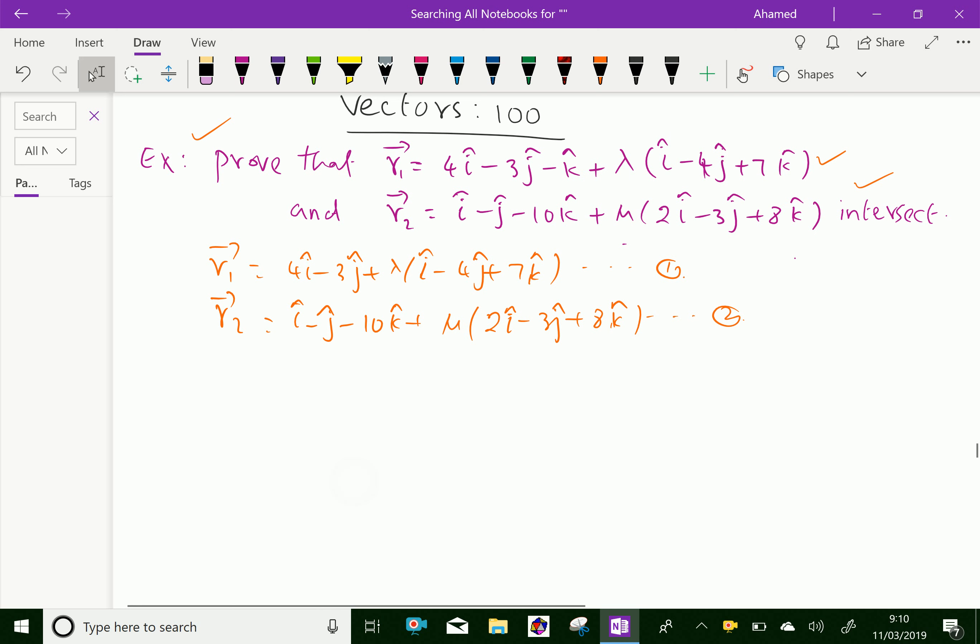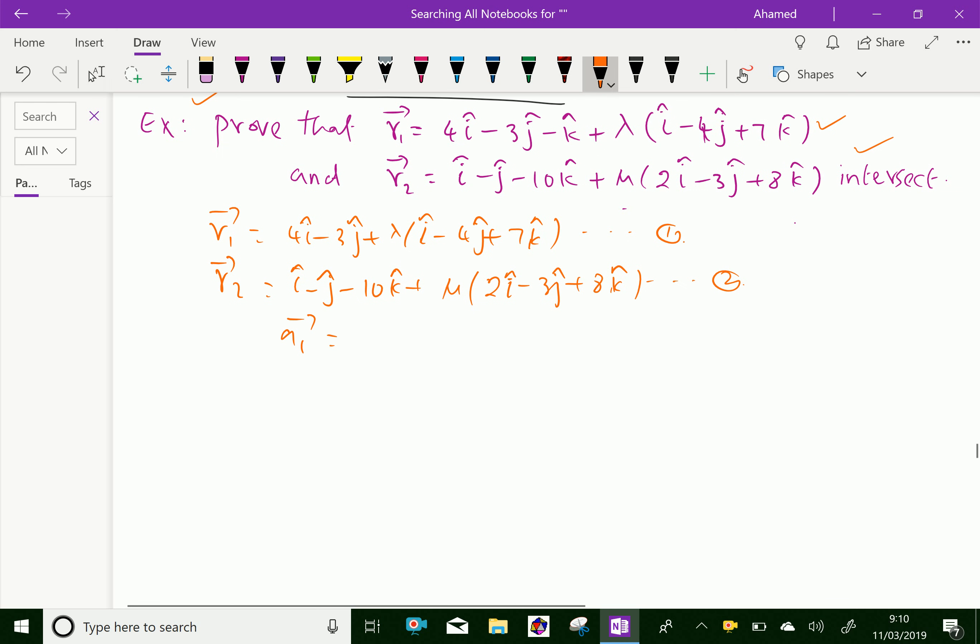Now, here vector a1 is 4i minus 3j minus k. This is a1 vector. a2 vector is i minus j minus 10k.